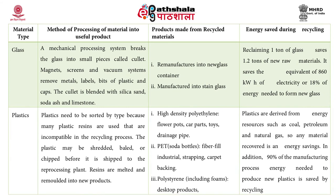For plastic recycling, plastics need to be sorted by type because many plastic resins are incompatible in the recycling process. Plastics are shredded, baled or chipped before being shipped to the reprocessing plant, where resins are melted and remoulded into new products. Products from recycled plastics include high-density polyethylene (HDPE) for flower pots, car parts, toys and drainage pipes; PET soda bottles for fibre fill, industrial strapping and carpet packing; and polystyrene for foams and desktop products. Recycling plastics saves almost 90% of the energy used to make new plastics and reduces reliance on fossil fuels like coal, petroleum and natural gas.